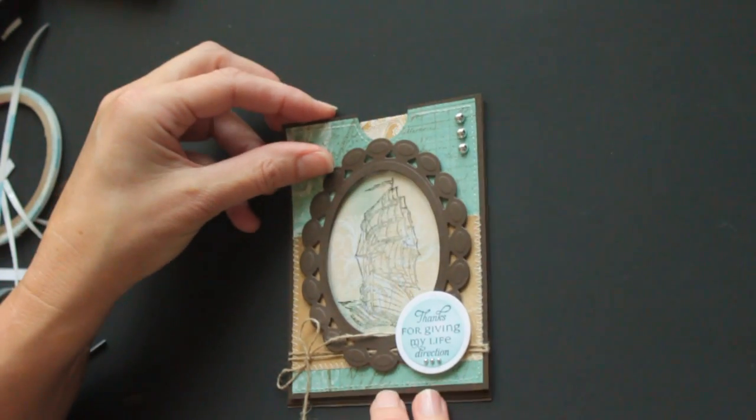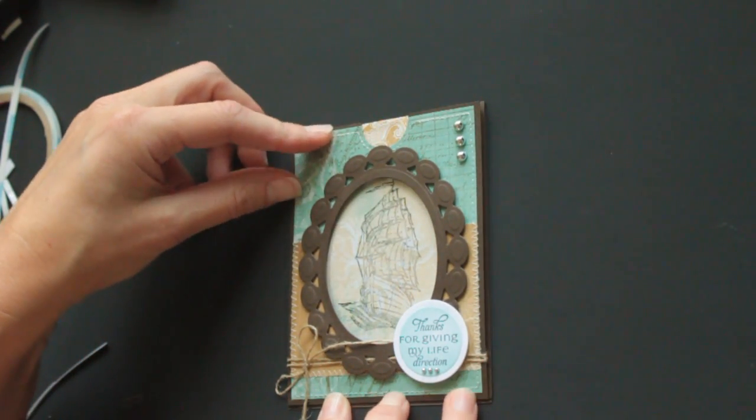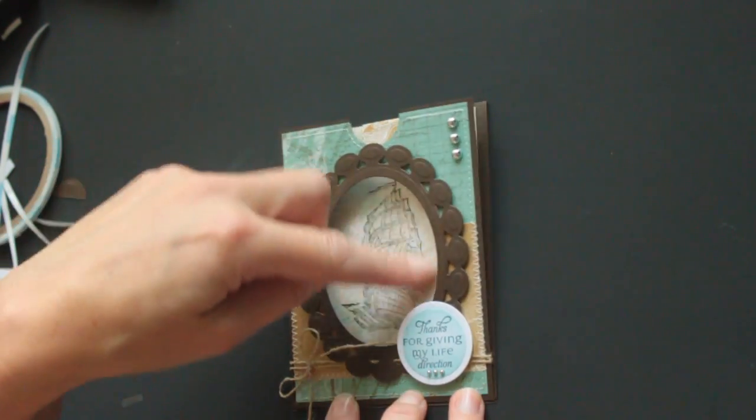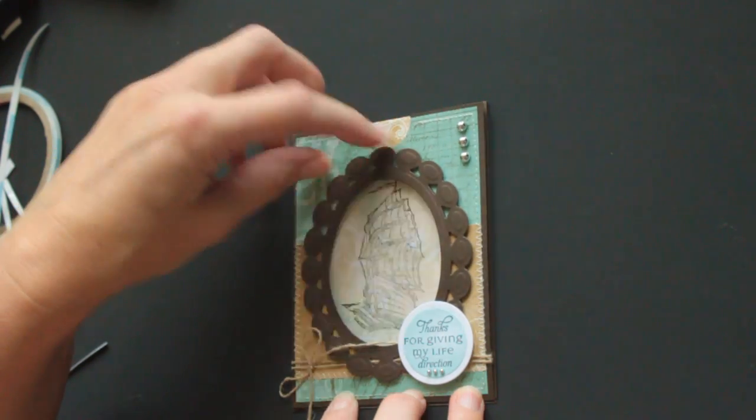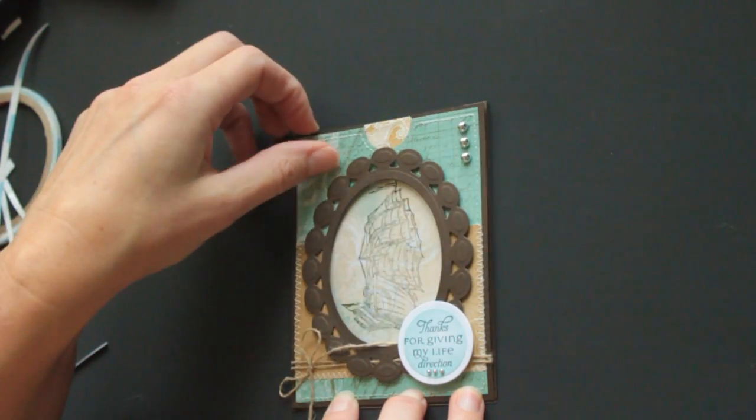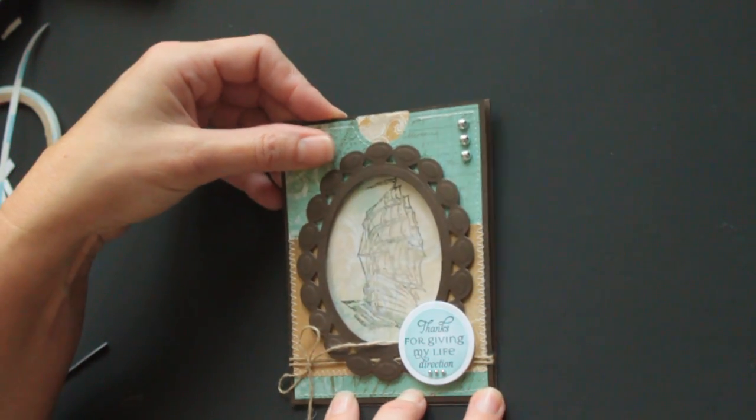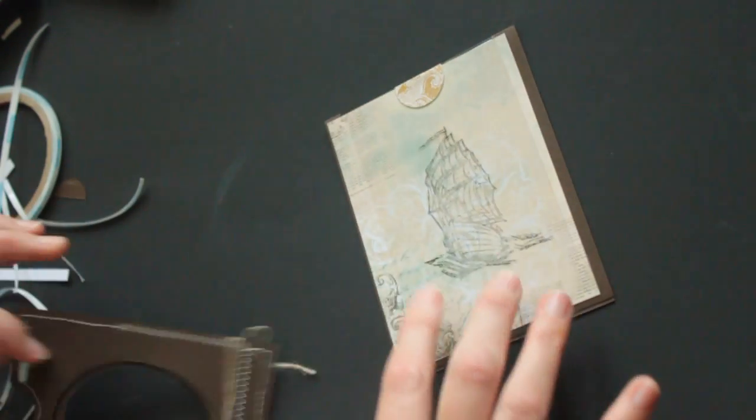And then we add, I already created a front. For the front, just use another four by five and a quarter inch piece of card stock. And cut an oval in it. And then I decorated it with a frame I cut out with beaded and classic oval Nestabilities.